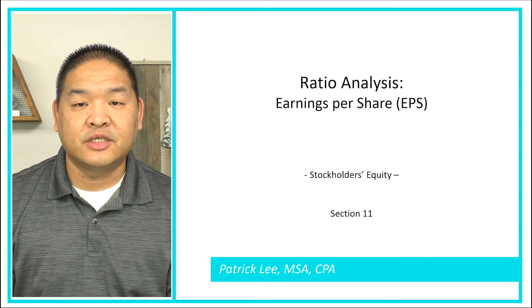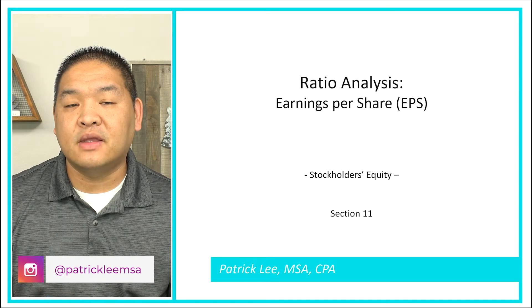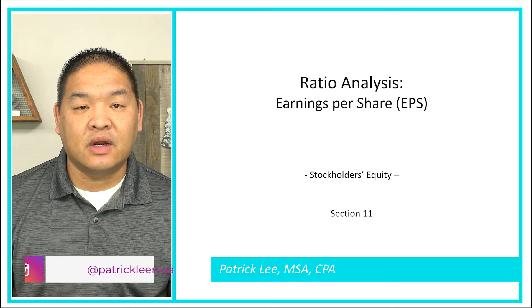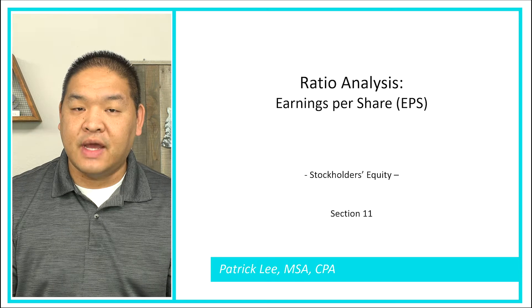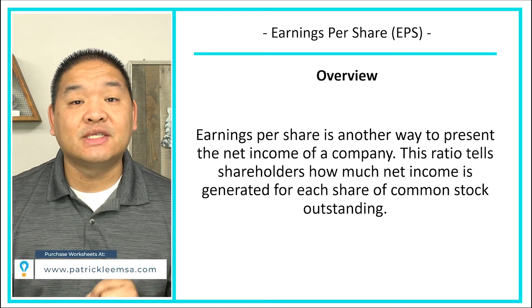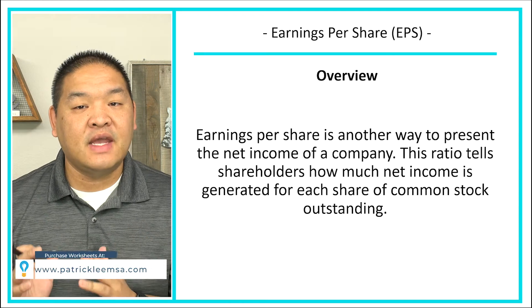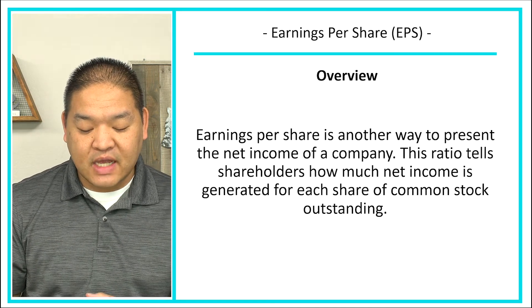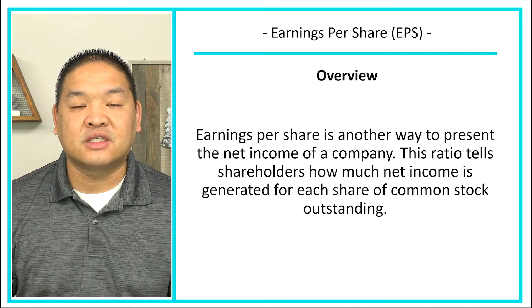In this lesson, we're going to look at earnings per share. This is one of three ratio analyses we're going to walk through in this section. Let's get started by understanding what EPS is, otherwise known as earnings per share. Earnings per share is another way to present the net income of a company. This ratio tells shareholders how much net income is generated for each share of common stock.